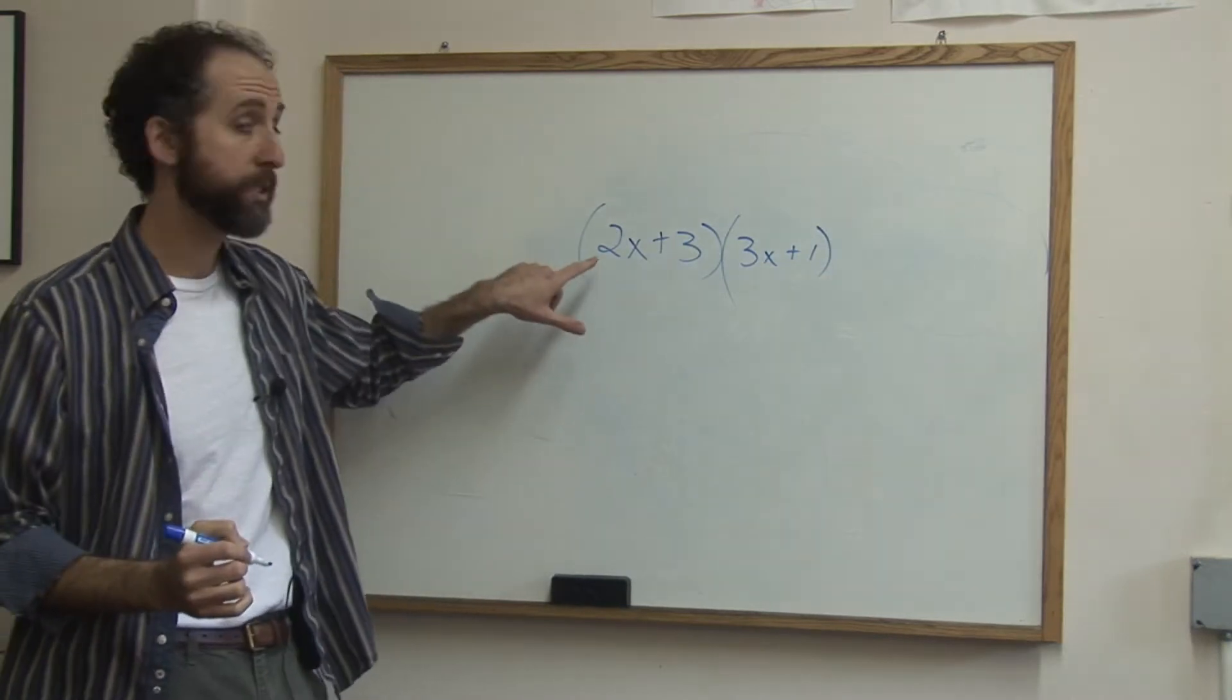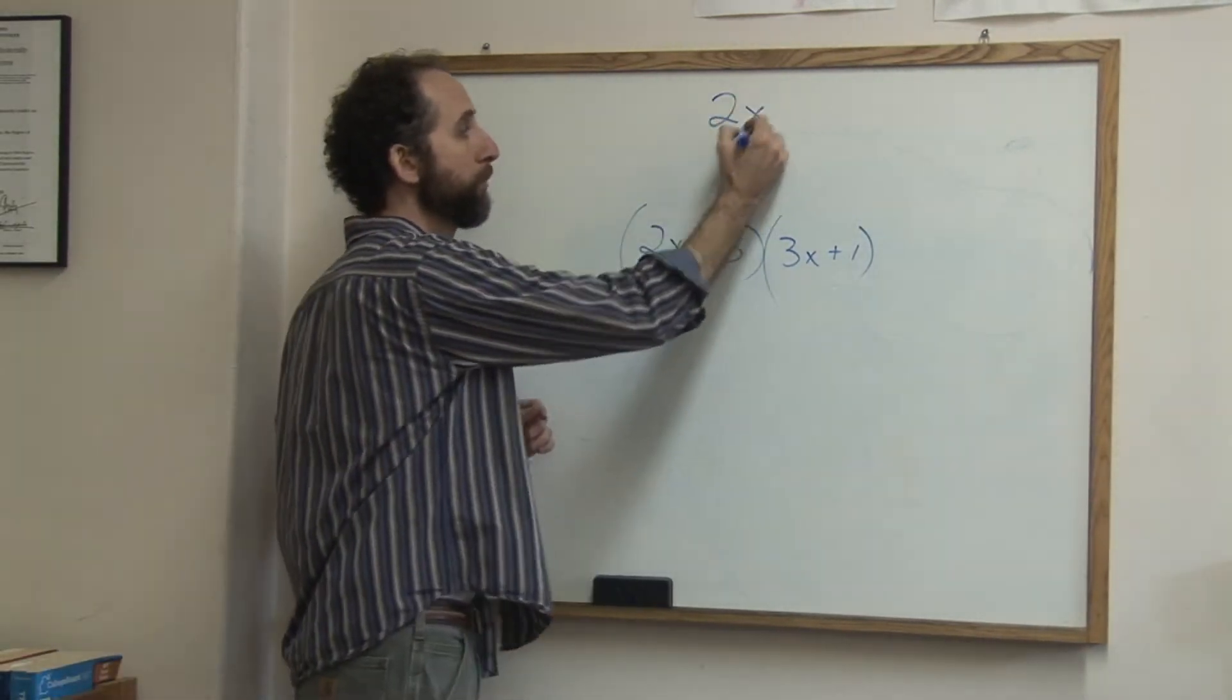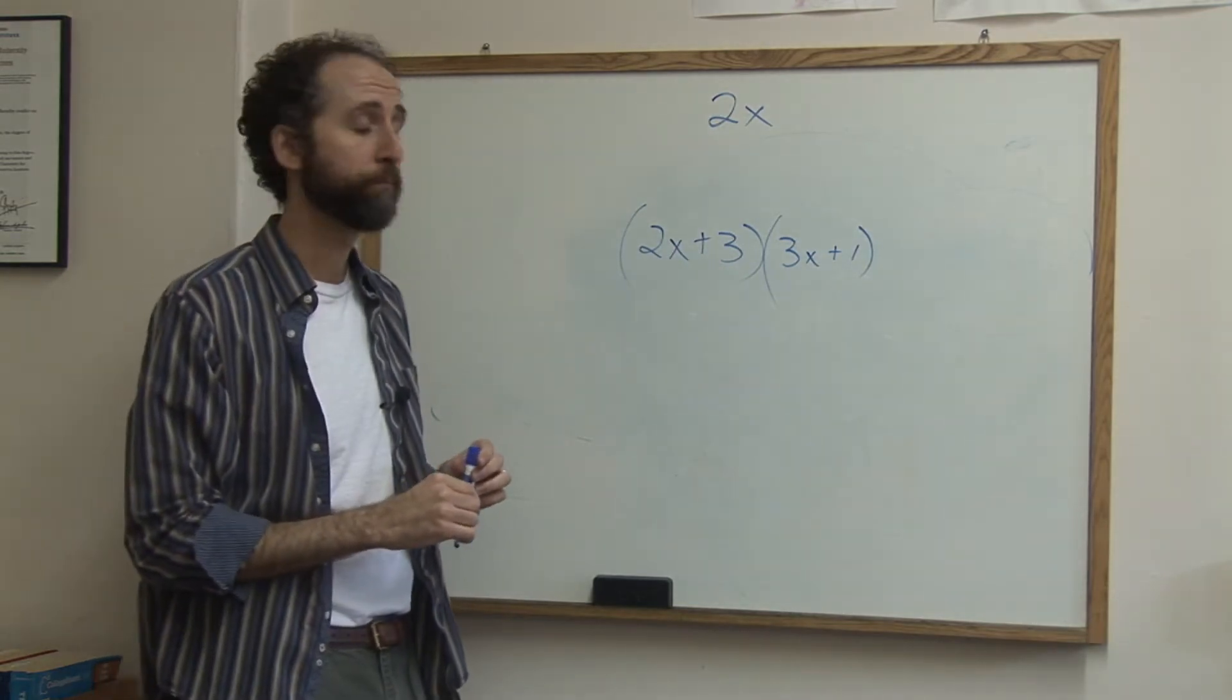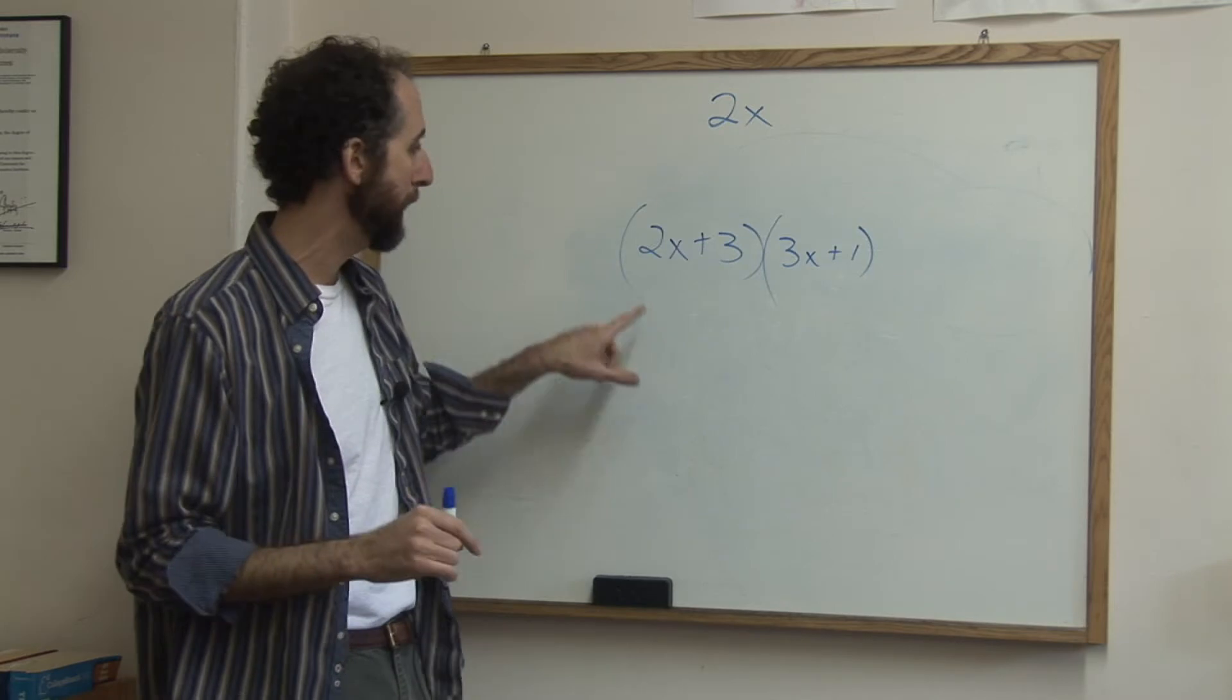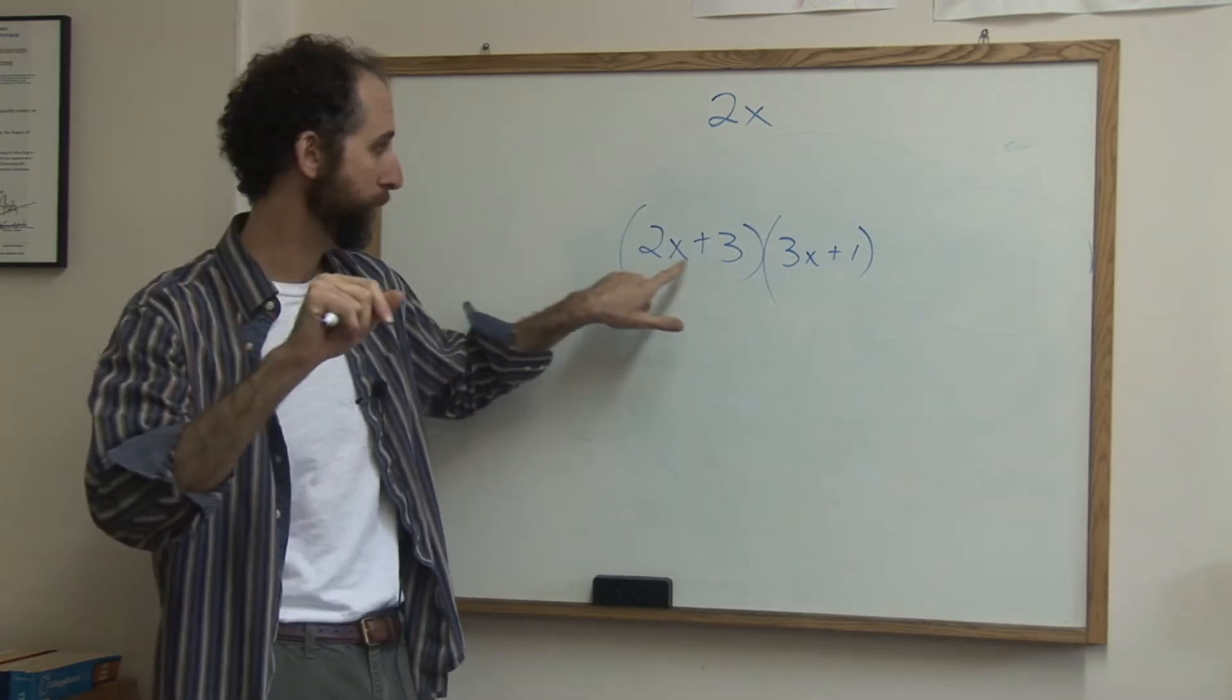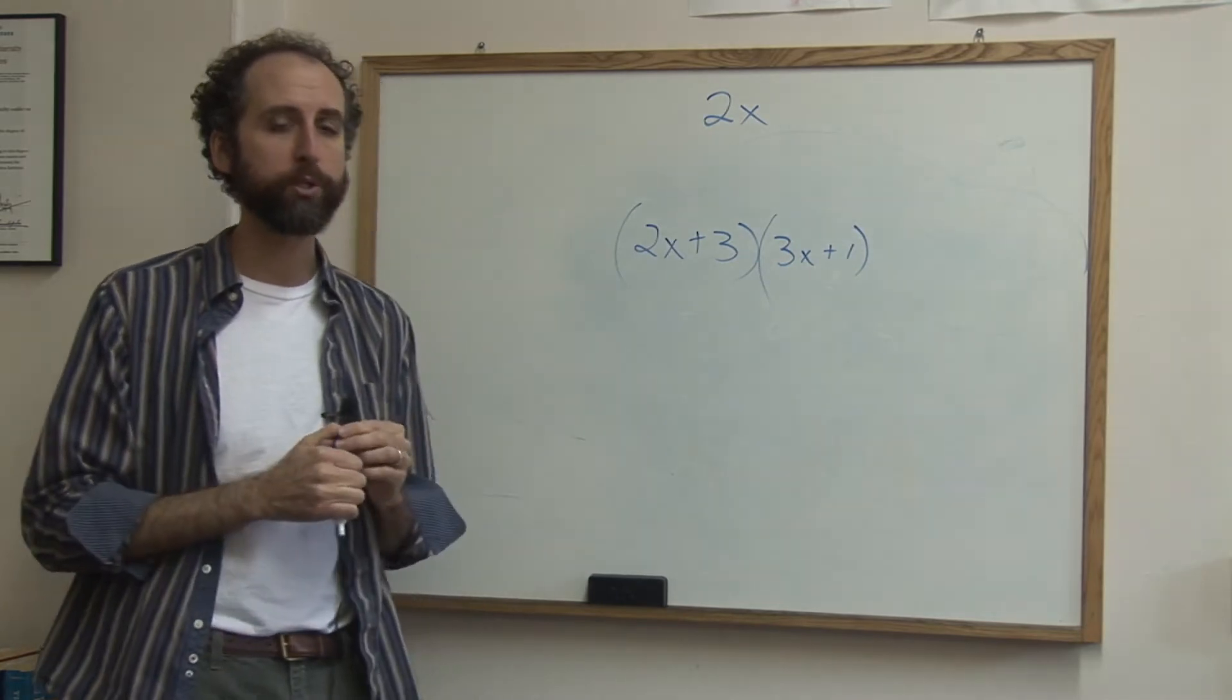Now polynomial means there's several terms. We actually could have had a monomial, which is one term. We saw that in another clip. Or we could have had a trinomial, which was three terms. What we're looking at here is a binomial, two terms, one, two, by a binomial, two terms. That's the most common one you see in math class.